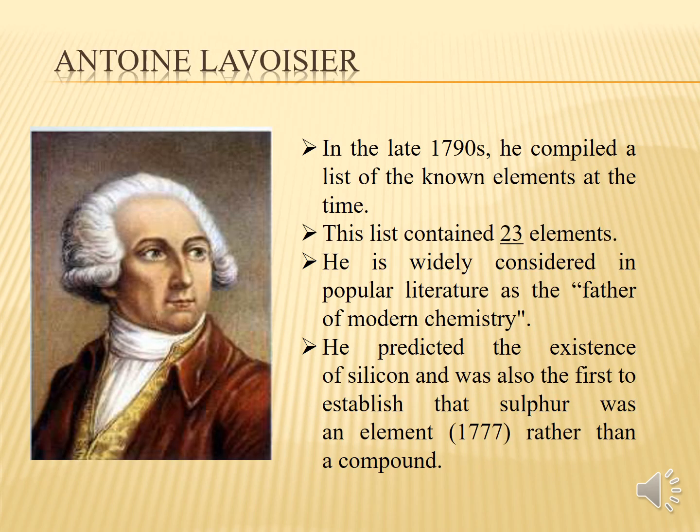We are starting from Antoine Lavoisier. Lavoisier did not directly contribute to the development of the periodic table as we know it. The modern periodic table was developed by Dmitri Mendeleev and others in the 19th century after Lavoisier's time. Lavoisier's contributions to chemistry were more focused on chemical reactions, the discovery of new elements like oxygen, and the development of fundamental principles such as the law of conservation of mass and the law of definite proportions.